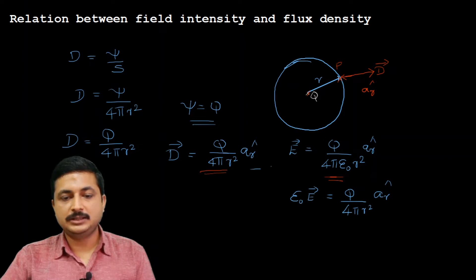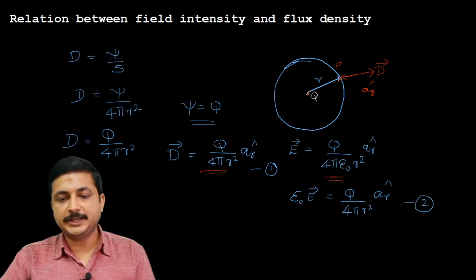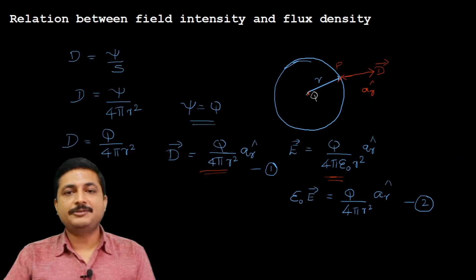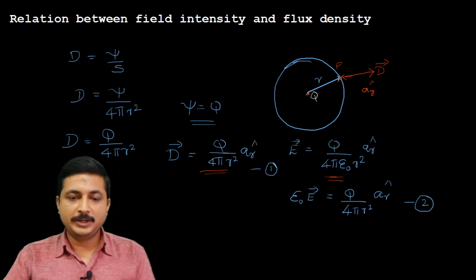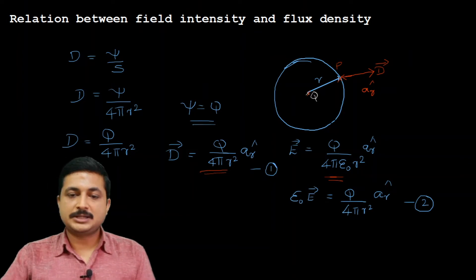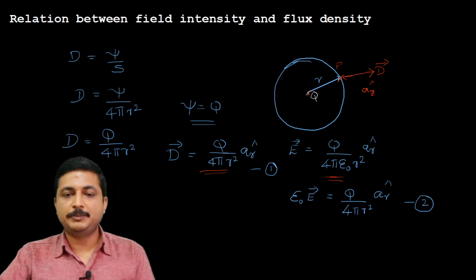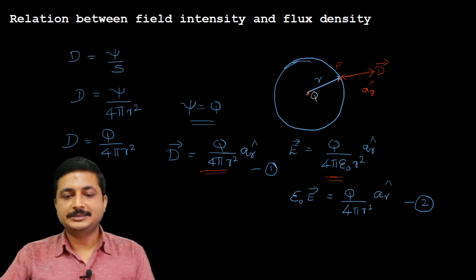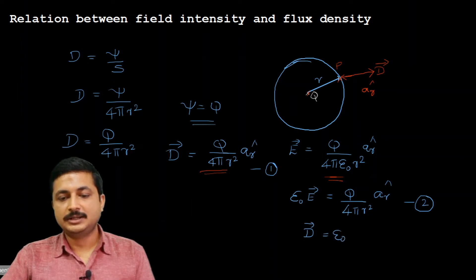Treating ε₀E vector equals Q/(4πr²)â_r as equation 1, and D vector equals Q/(4πr²)â_r as equation 2, comparing the two: the right-hand sides are the same — both Q divided by 4πr² and both in direction â_r, since E vector and D vector are calculated at the same point on the surface. Both direction and magnitude are the same, so since the right-hand sides are equal, the left-hand sides can be equated: D vector equals ε₀E vector.